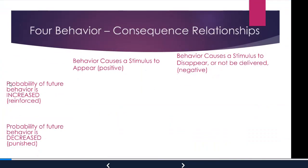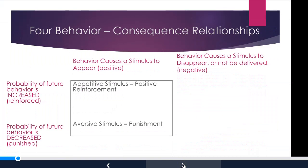The probability of future behavior can be increased — that's what reinforcement means, the behavior is reinforced. Or the probability of future behavior is decreased — that's what punishment means. If the stimulus is what we call an appetitive stimulus — something desirable, like a piece of food — we have positive reinforcement, because the behavior is causing something to appear, and because it's appetitive, it reinforces or increases future behavior.